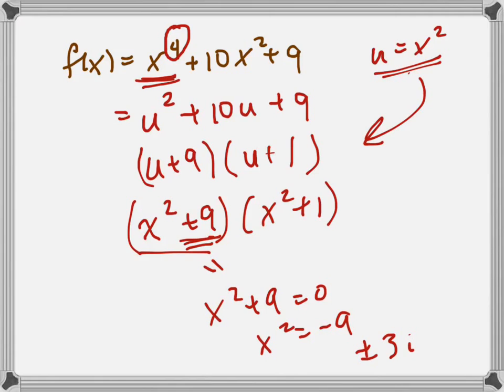Because that's not x squared minus 9, but that's x squared plus 9. So I'd have to subtract 9. And then taking the square root of it, I'd have to introduce i into my equation.